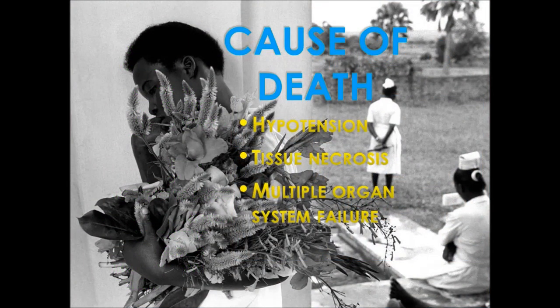Because of the bleeding associated with Ebola, many people think victims bleed to death, but that is not the case. With severe clotting throughout the vascular system, it is impossible for oxygen to reach the tissues, leading to necrosis and death of the organs. Multiple organ system failure is the main cause of death, and the organs that fail are varied.